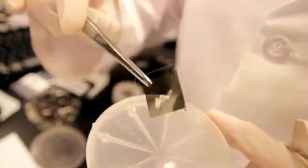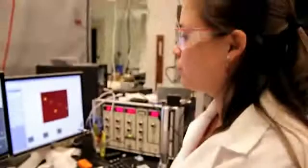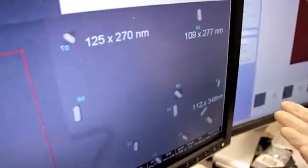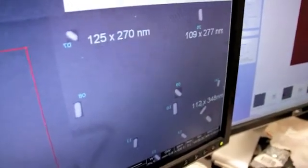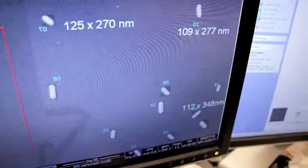On this sample, we have broad gold nanorods with widths ranging from 80 to 130 nanometers and lengths ranging from 250 to 500 nanometers. This scanning electron microscope image shows a few of the nanorods, and you can see that there's quite some variation in their size as well as some slight variations in the shape.